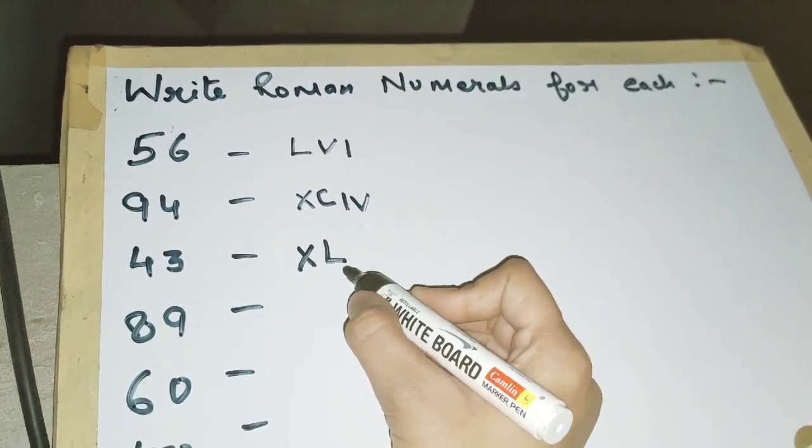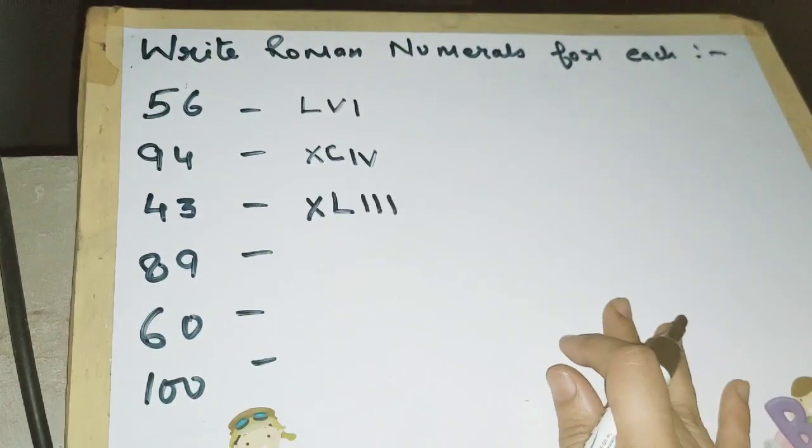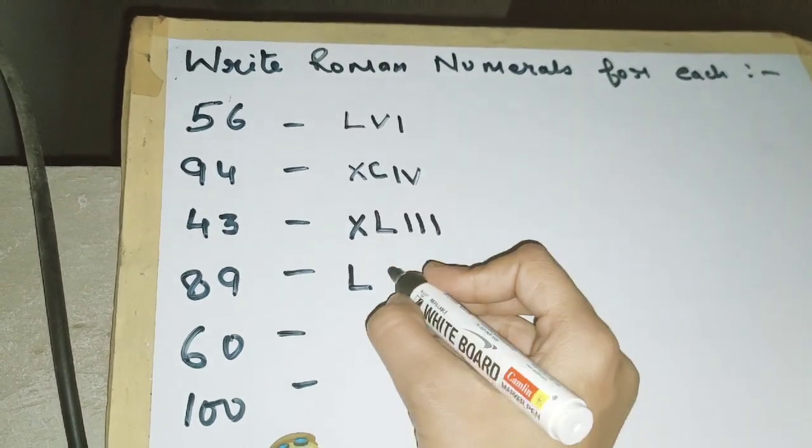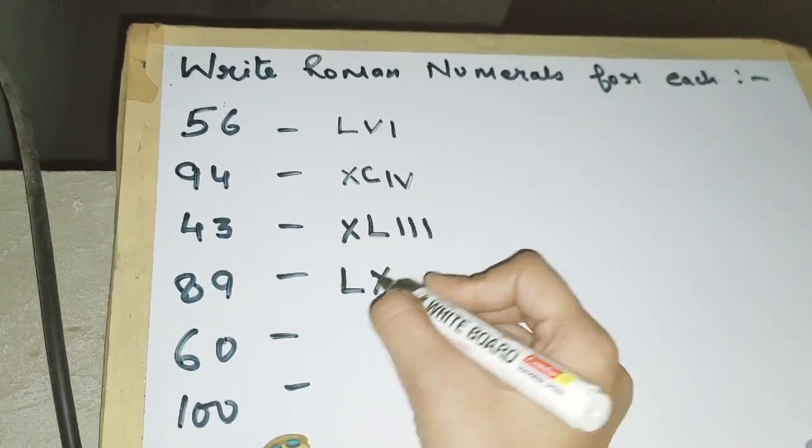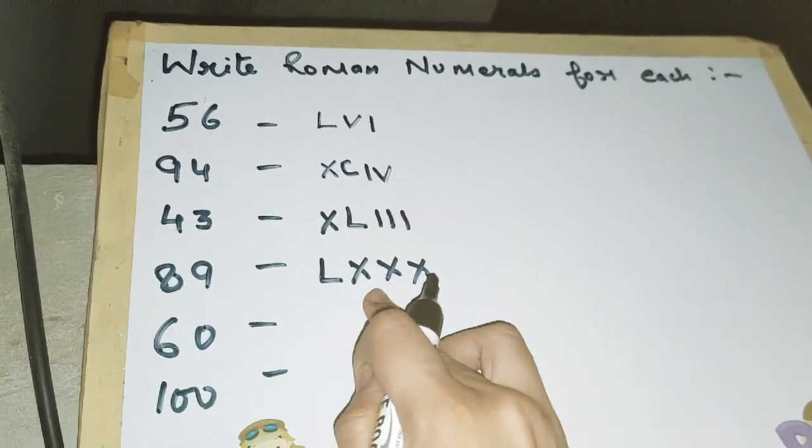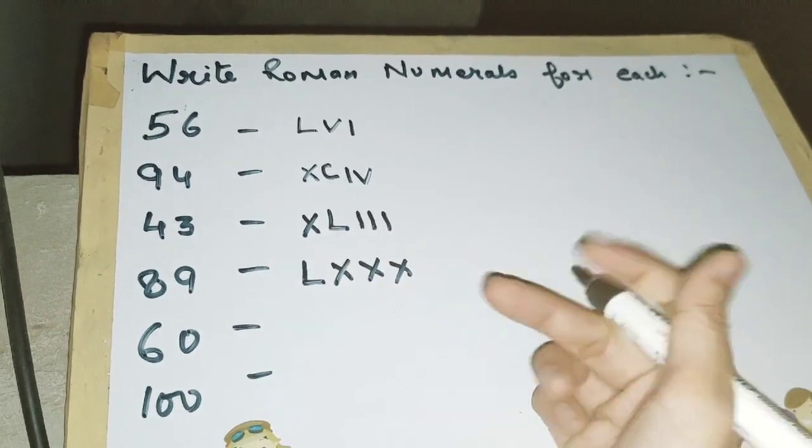Now for 89: L is 50, then XXX. This is 50, then 60, then 70, then 80. We have added tens.